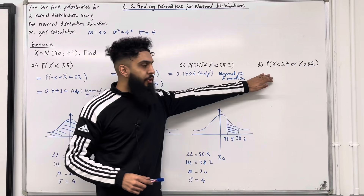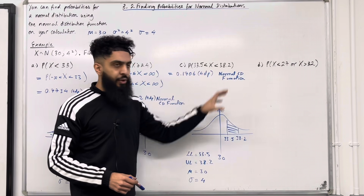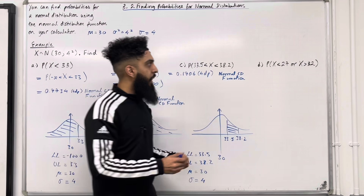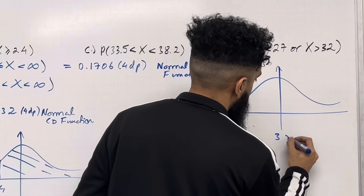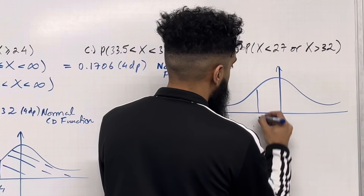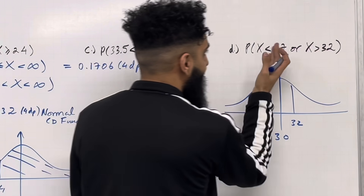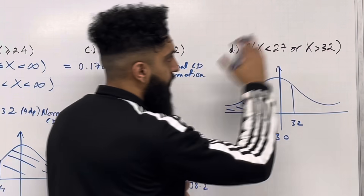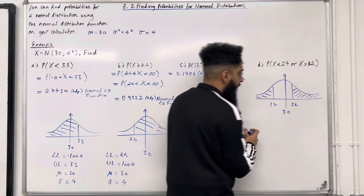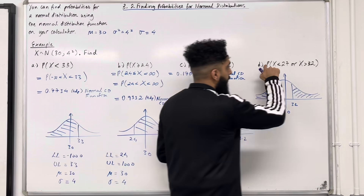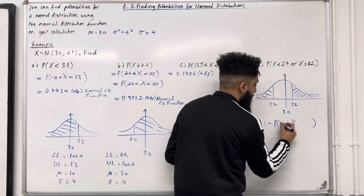Let's have a look at part D, the final part: probability X is less than 27 or X is greater than 32. I'm going to illustrate this on a bell-shaped curve centred at the mean 30. 27 is less than 30 so it sits to the left, and 32 is more than 30 so it sits to the right. We want the area to the left of 27 plus the area to the right of 32. To calculate these two areas together, we use: this probability equals 1 minus the probability that X is between 27 and 32.